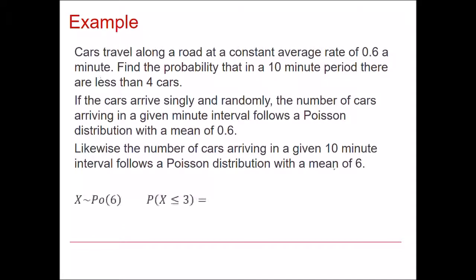So assuming that all the conditions of the Poisson distribution are met, we can multiply that constant average rate for 1 minute by 10 and get a mean of 60 for every 10 minute period. Once we've got that, we can then just calculate our probability as before. So here I've done it using GeoGebra to get a value of 0.151 to 3 significant figures.